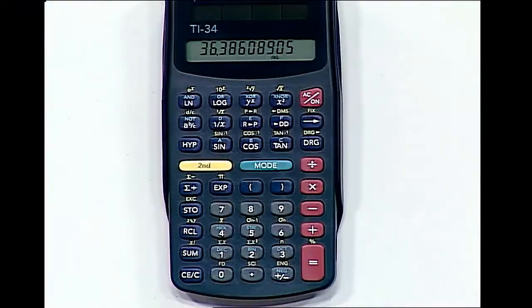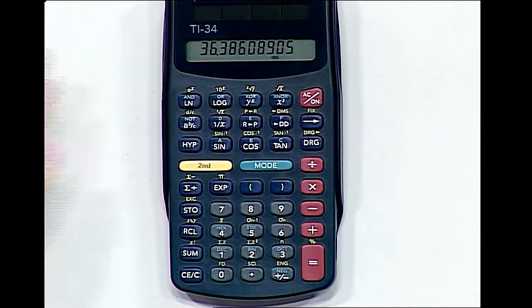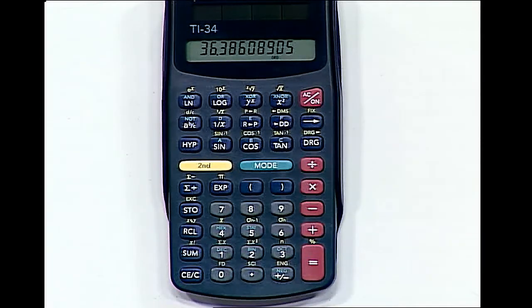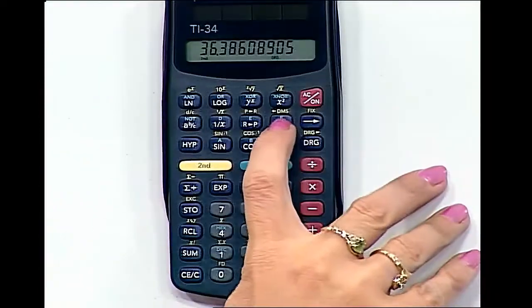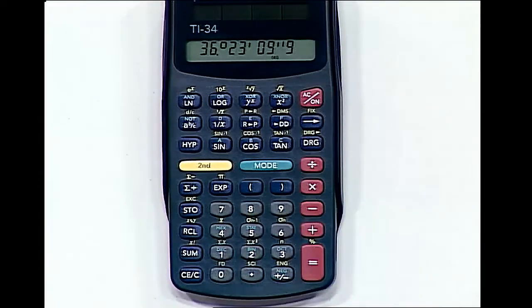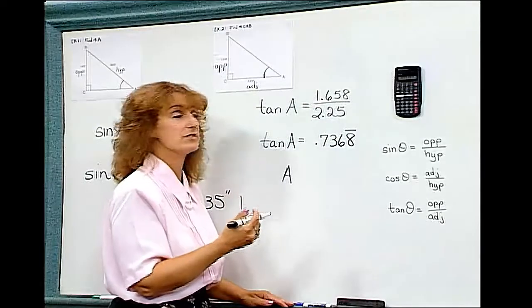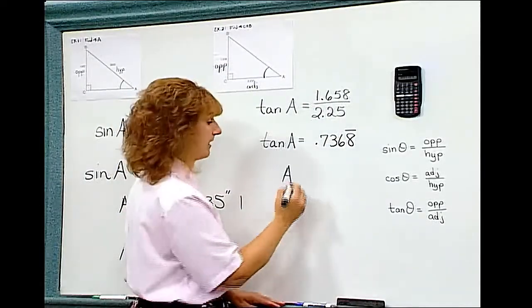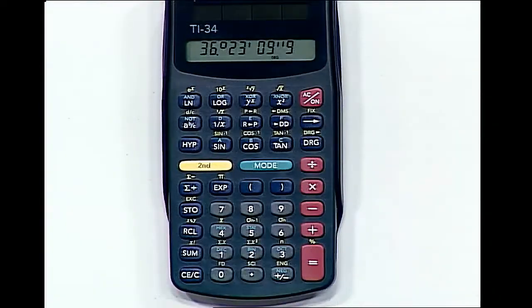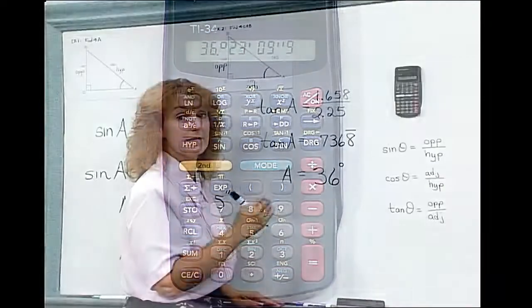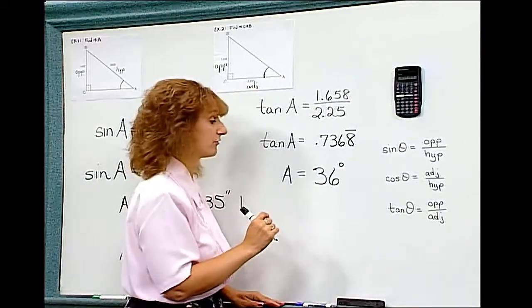Second tangent gives me a decimal degree, which I do not want. I want it in degrees, minutes, seconds. So I hit second, degrees, minutes, seconds. And in this case, I'm going to round it to the nearest degree. If I round this to the nearest degree, I will get 36 degrees since 23 minutes is less than half of a degree.